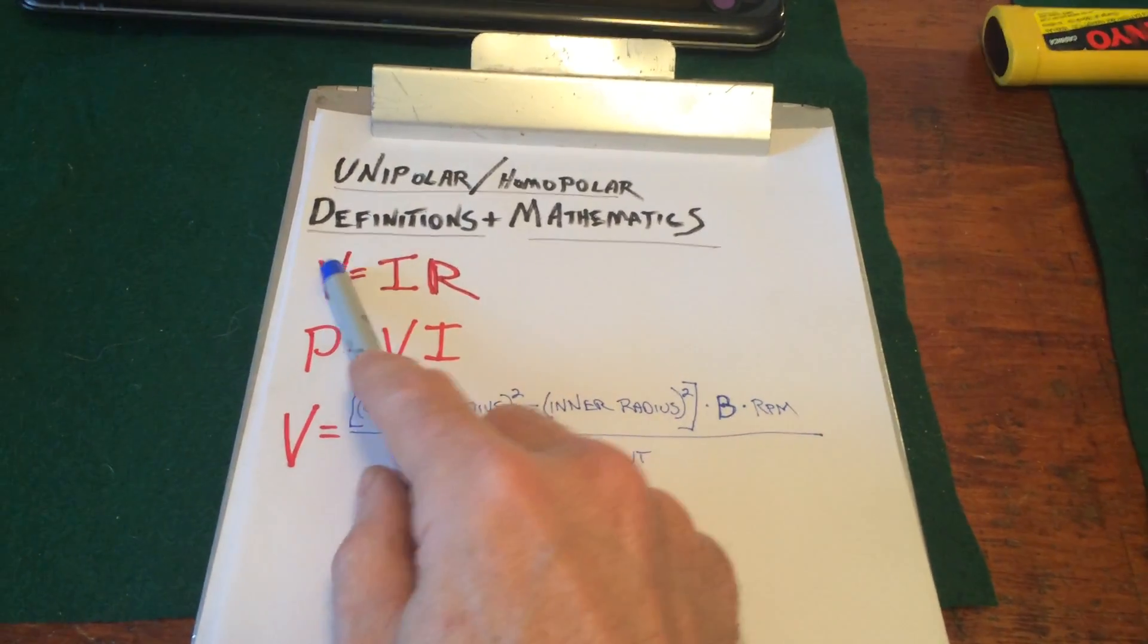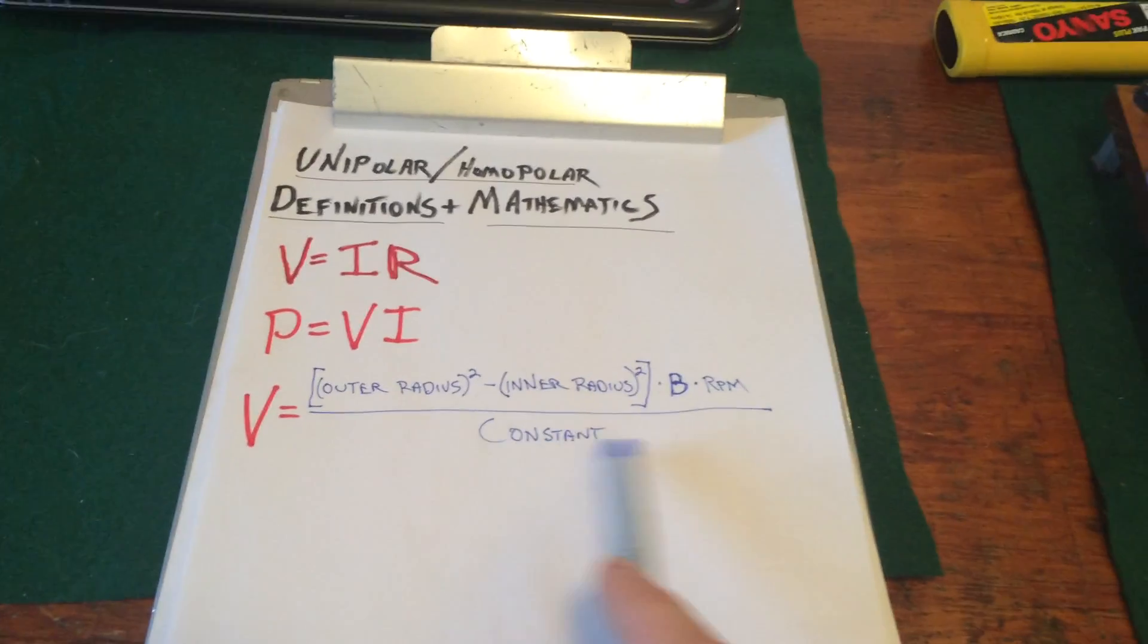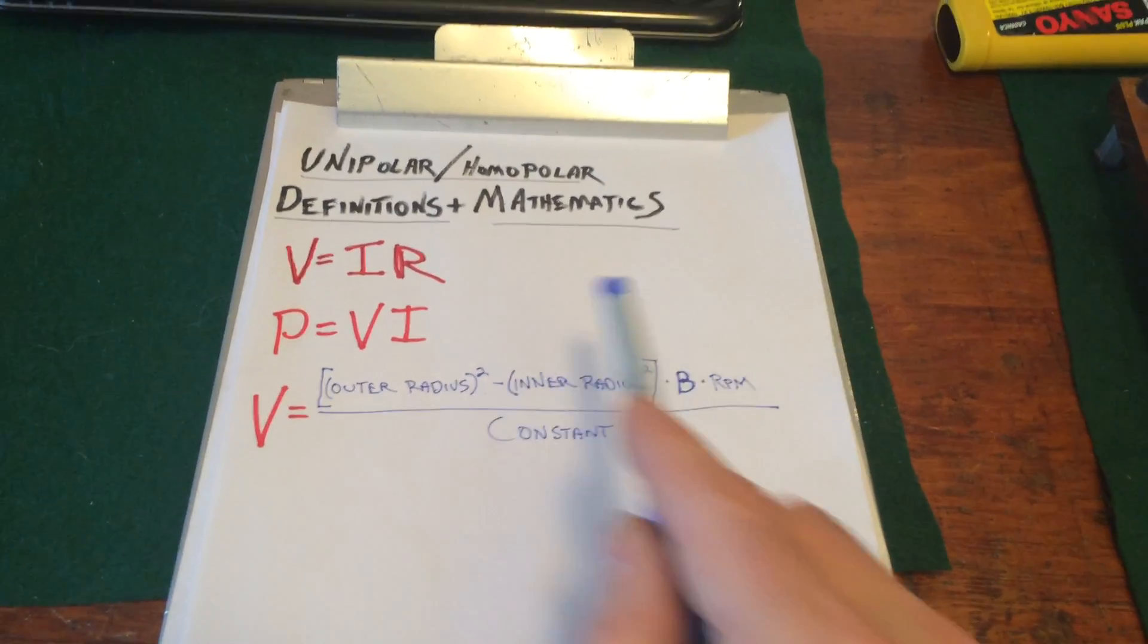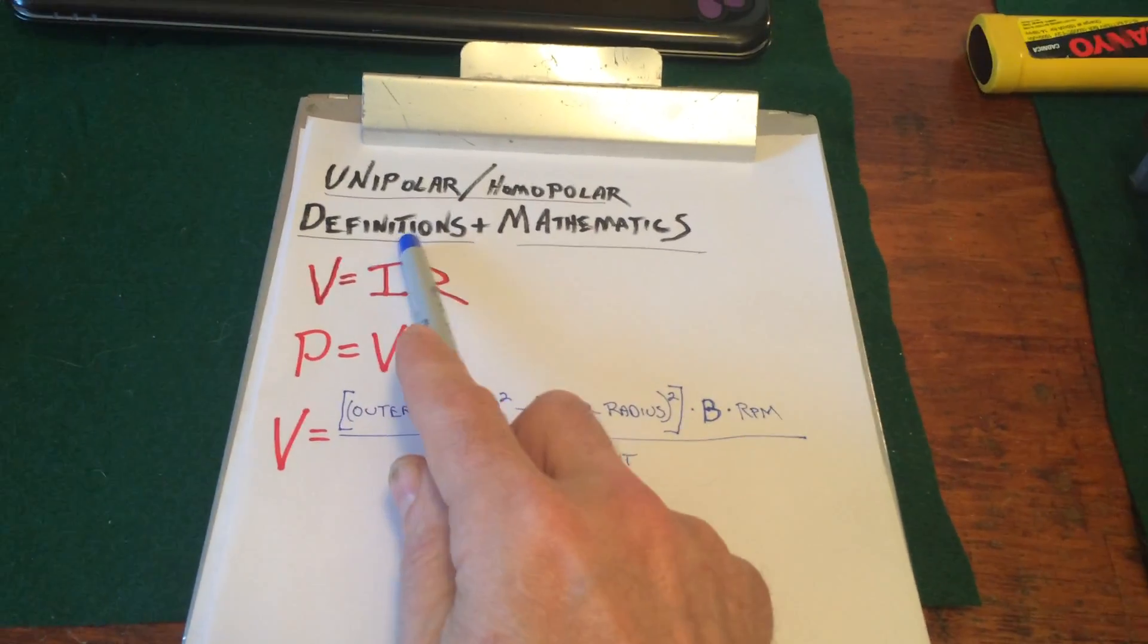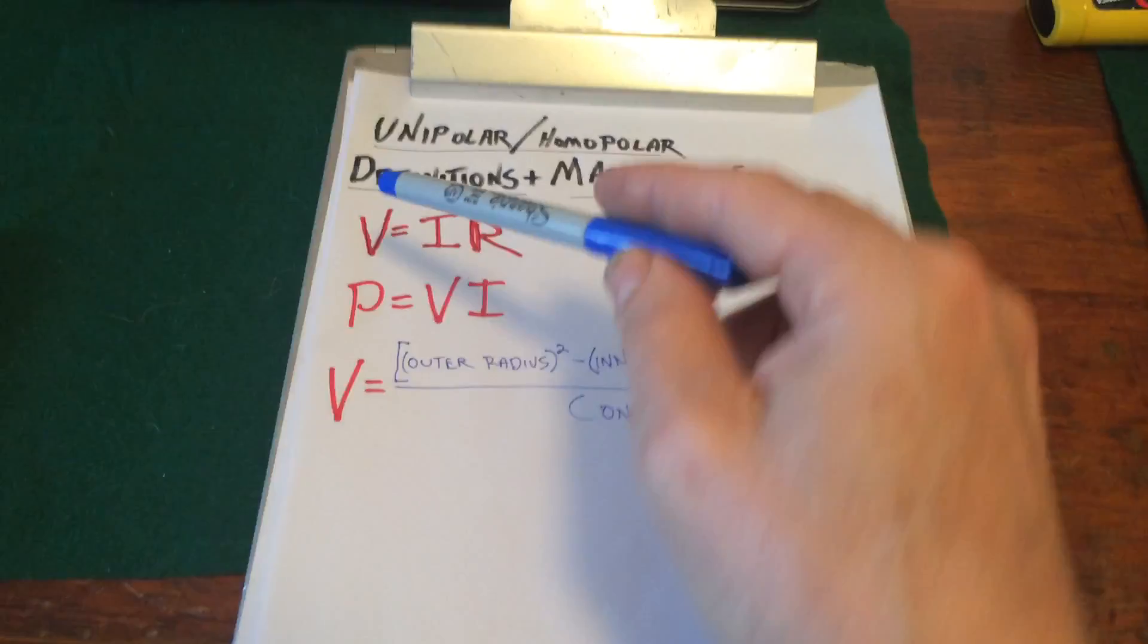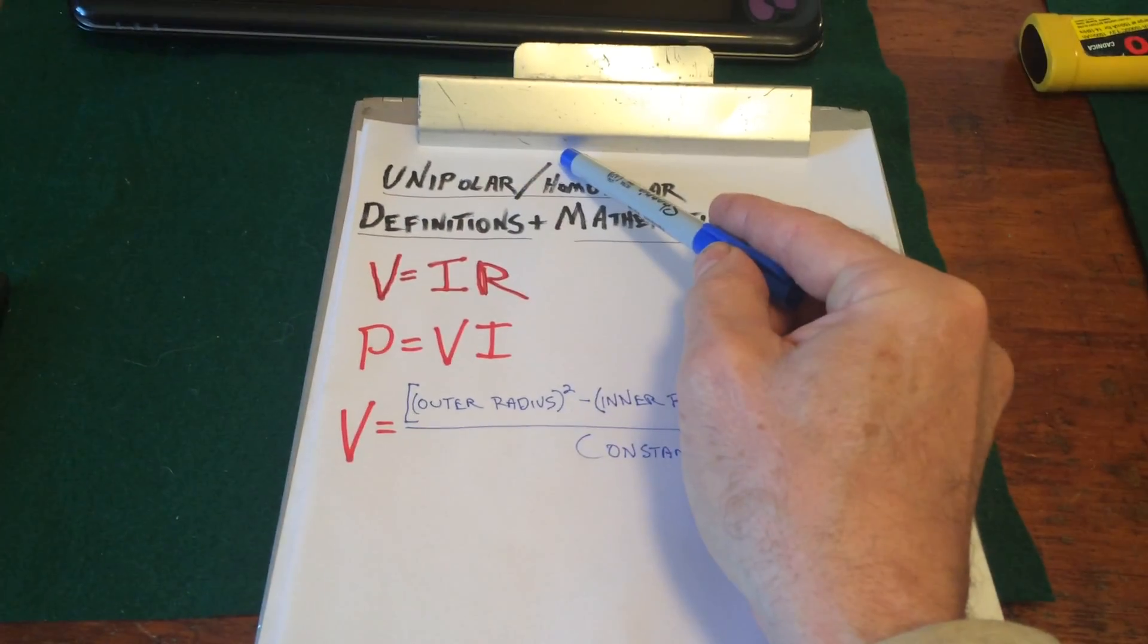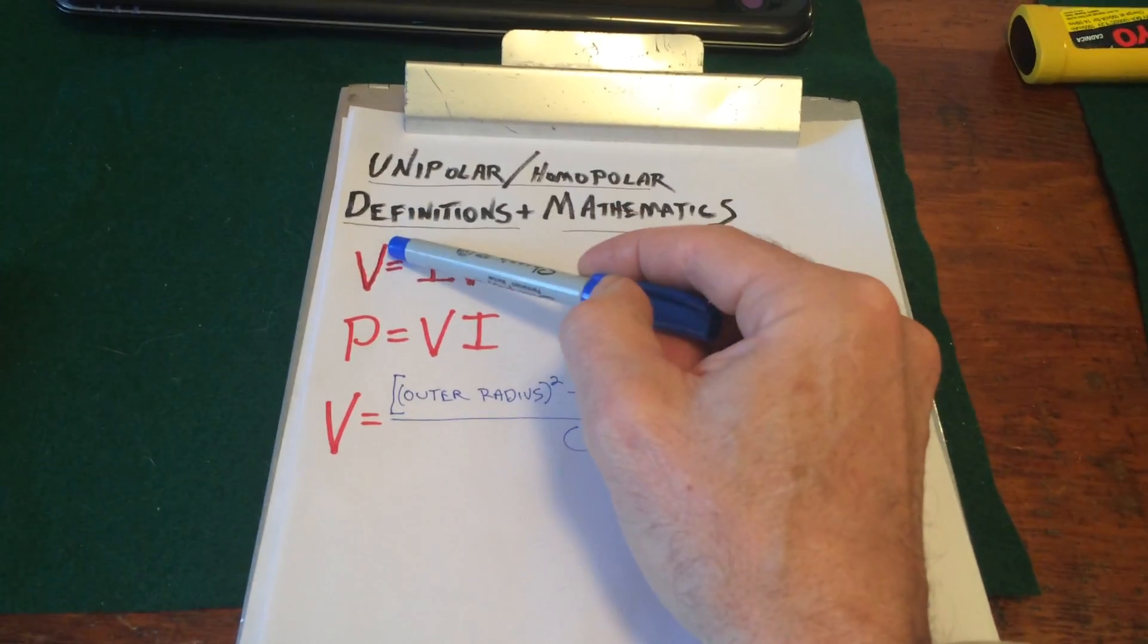So as the voltage would increase or decrease with RPM, the current will trace it. It will follow it. So as the voltage goes up, the current will go up. It has to from this function.